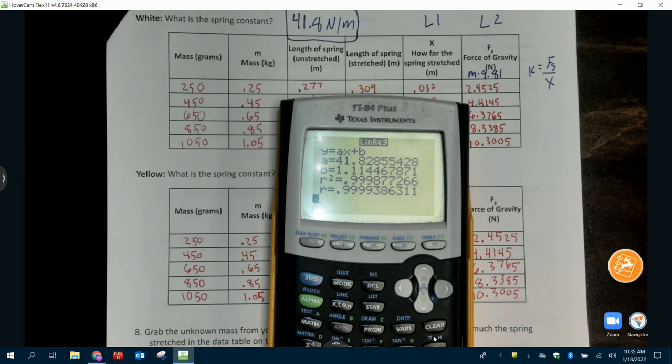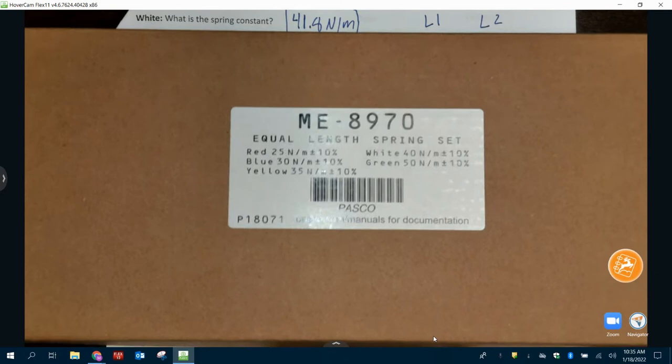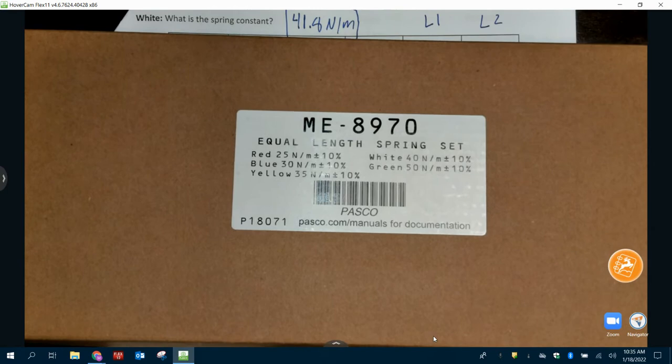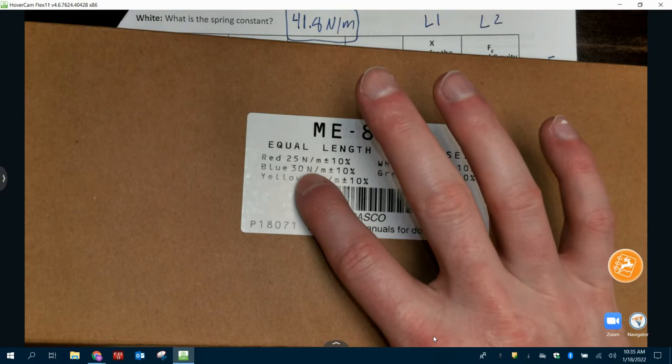They should come out very close to these numbers right here. Red should be about 25 newtons when it says plus 10% or plus or minus. That means it could be 22.5 or 27.5, somewhere in between there. Okay.